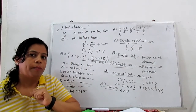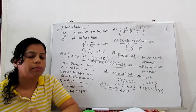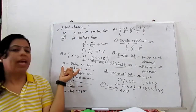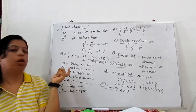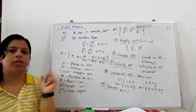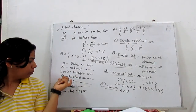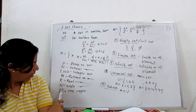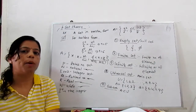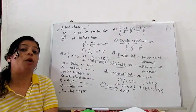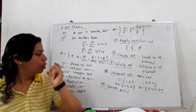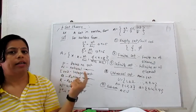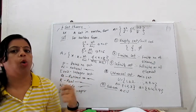Next, some standard notations you should always know because in books or problems they are given directly. Capital P shows the set of prime numbers. N is the set of natural numbers. I or Z is the set of integers. Q is the set of rational numbers. R is the set of real numbers. W is the set of whole numbers. I-plus means set of all positive integers. I-minus means set of all negative integers. This is the standard notation of sets which we have to remember.